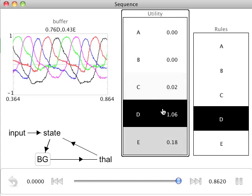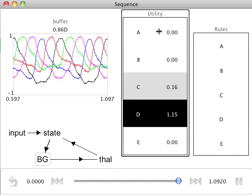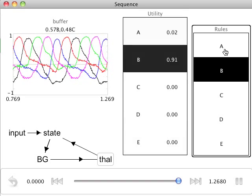We can see the cortical state with the highest utility value in this graph. Basal ganglia is selecting the action, or rule, corresponding to the highest valued state.